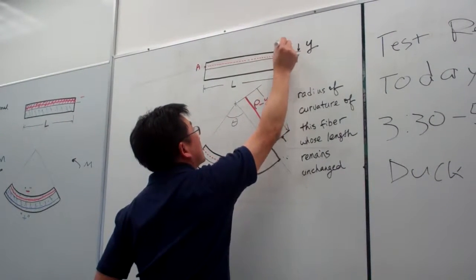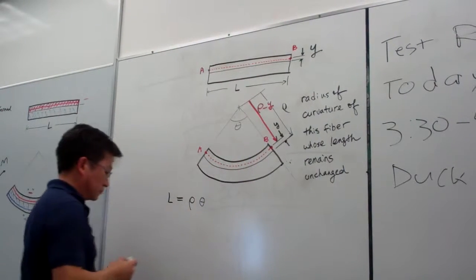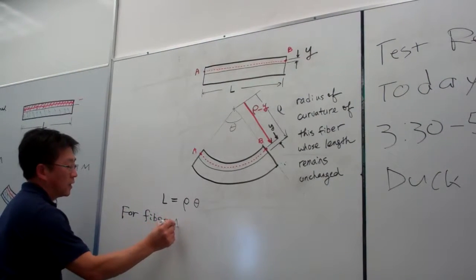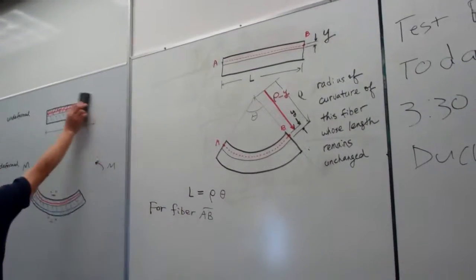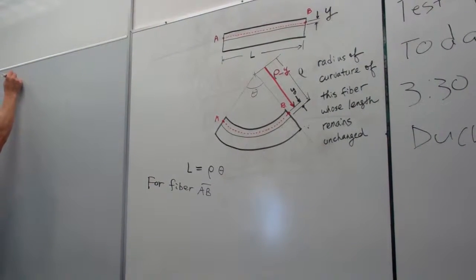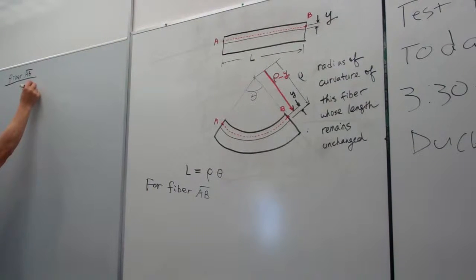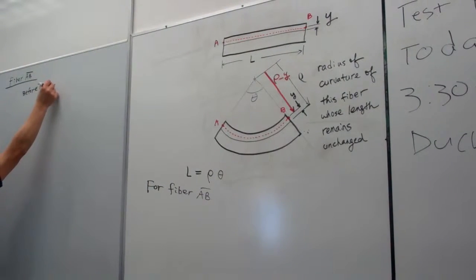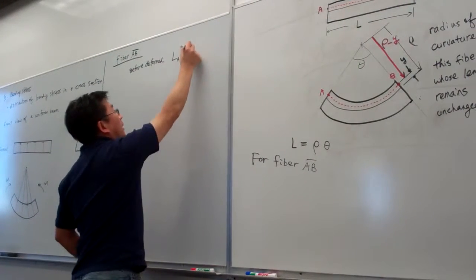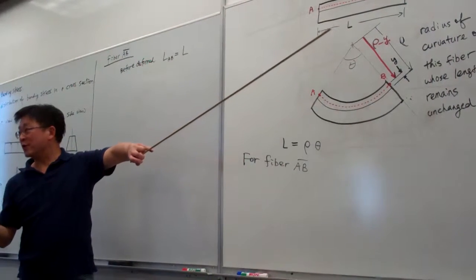This fiber is called A and B. For fiber AB, before deformation, the length of AB is equal to L, assuming the model is uniform.